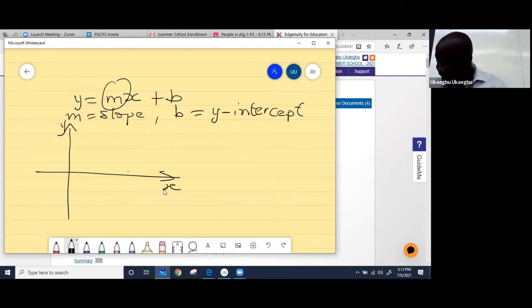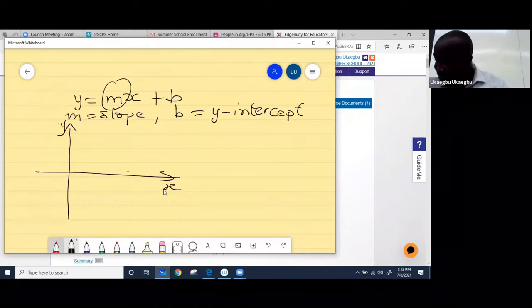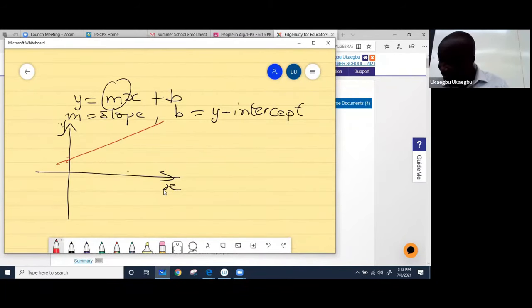Okay, so this is line one, and this is line two. Now both lines are straight lines. Both of them can be represented by an equation that looks like this.